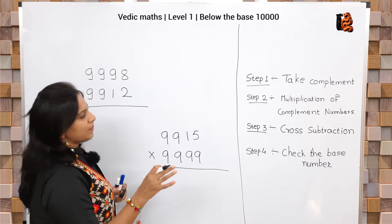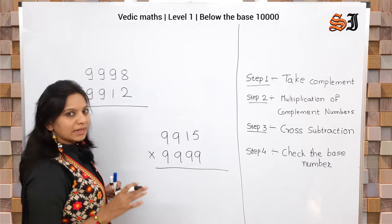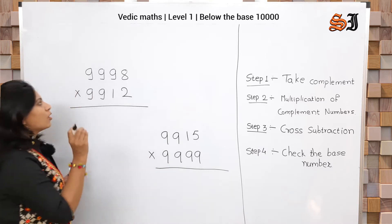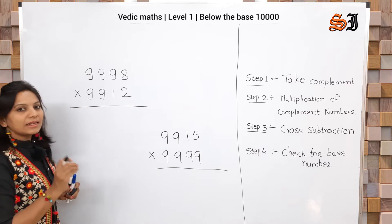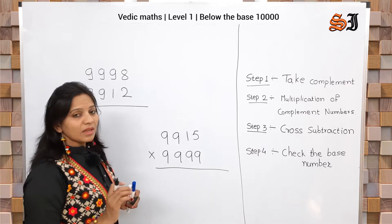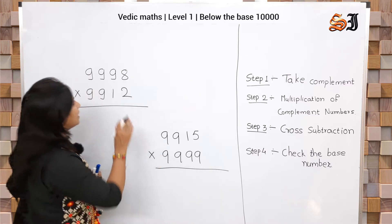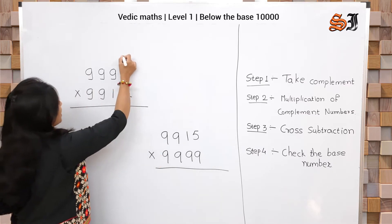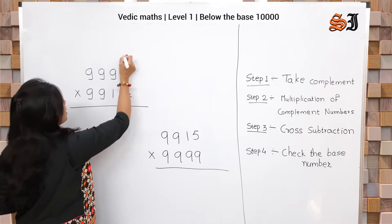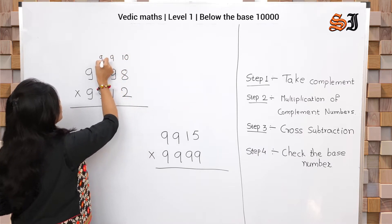The first step is to take a complement. The complement rule is: all from 9, last from 10. For the first number, the last digit is subtracted from 10, and the remaining numbers are all subtracted from 9.